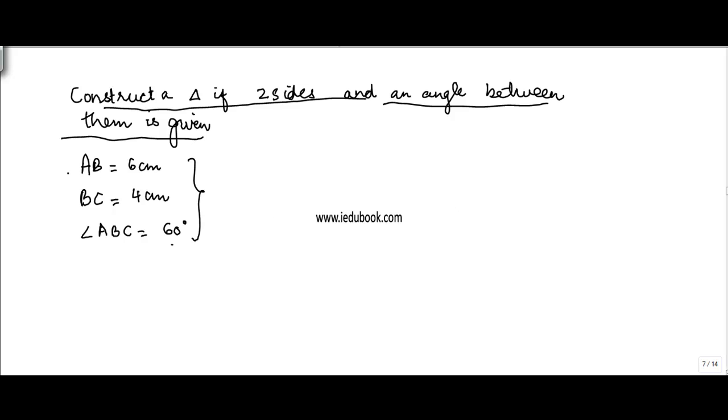Now what I notice here is that I know two sides. Let's say if I draw a rough triangle ABC. I know AB is equal to 6 cm, BC is equal to 4 cm, and angle ABC. This angle is 60 degrees.